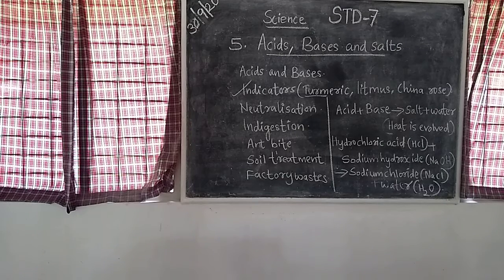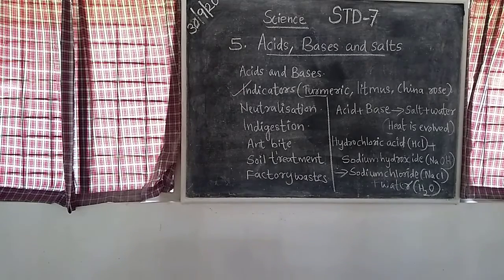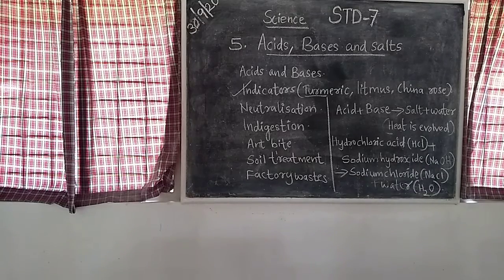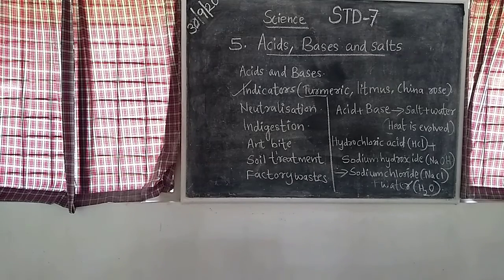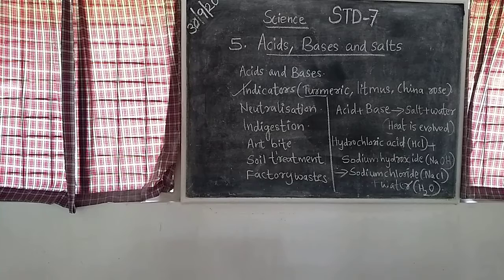The first indicator is litmus paper. Litmus is a natural dye and a natural indicator. It is extracted from lichens. When added to an acidic solution, it turns red.